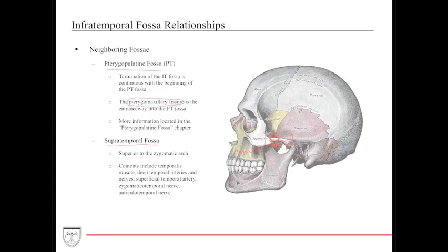The supratemporal fossa is the region above the zygomatic arch. It contains important structures, though clinically not as much. It contains the temporalis muscle, which descends for mastication, the deep temporal artery, the superficial temporal artery, and the zygomatic and auriculotemporal nerves, which are both sensory nerves.